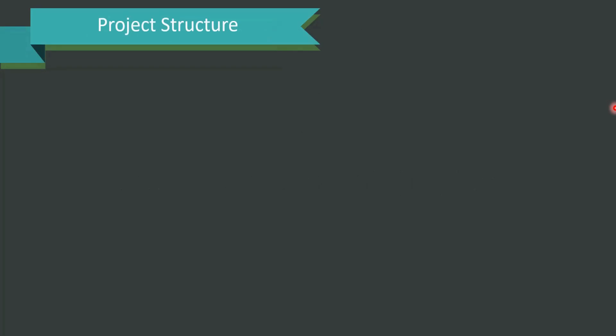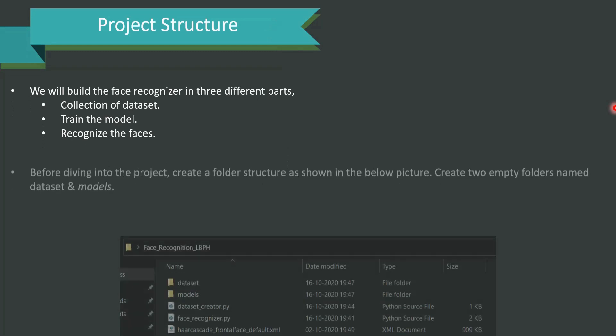Face Recognition using Python. Let's understand the project structure first. We will build the face recognizer in three different parts. The first phase of the project is all about collection of the dataset. The second phase is all about training the model. The third one is finally for recognizing the faces.